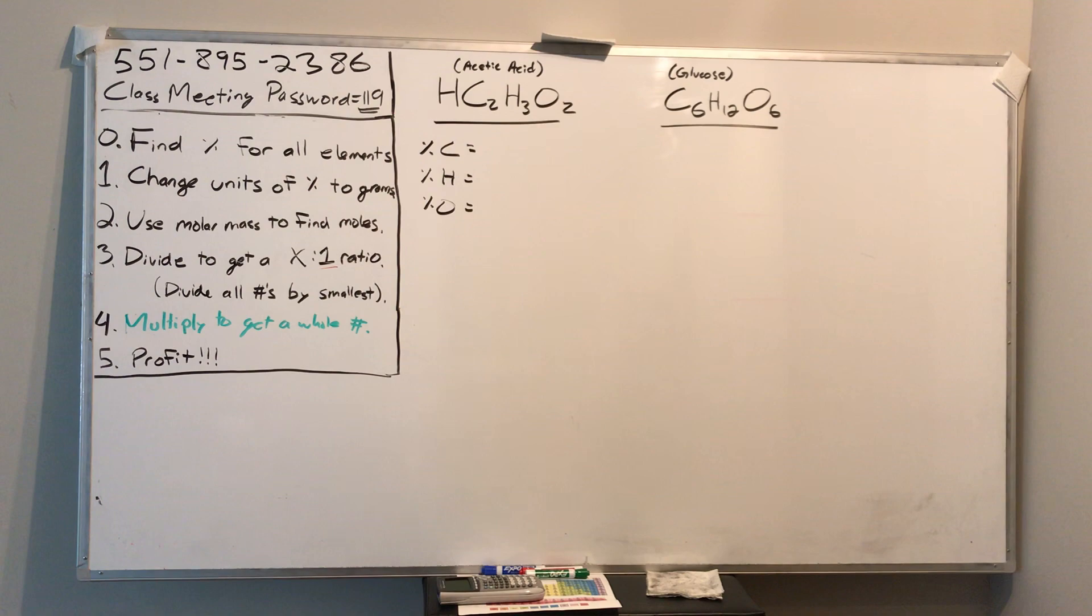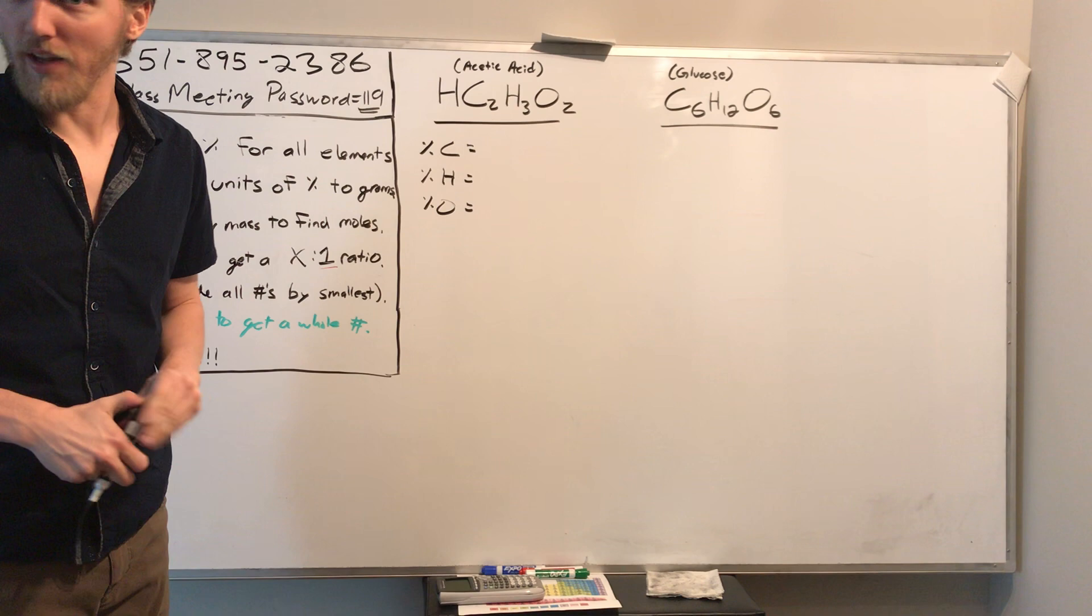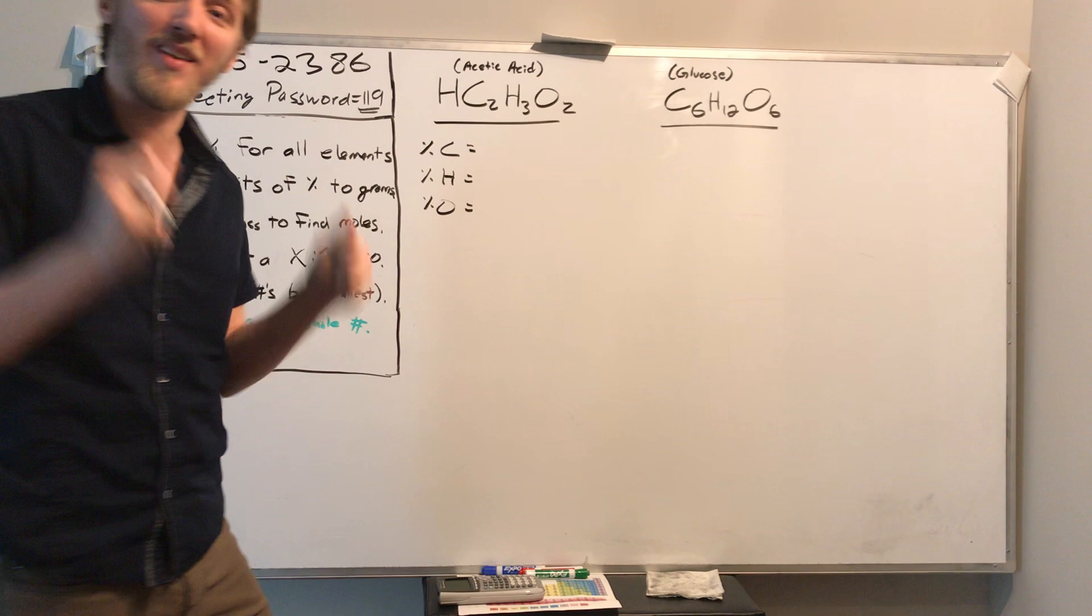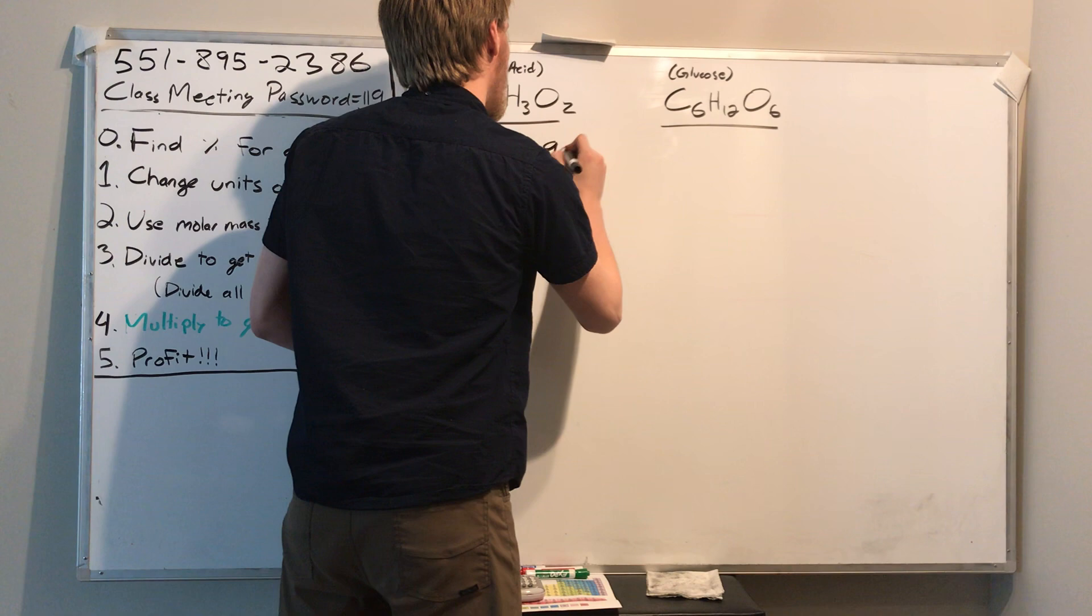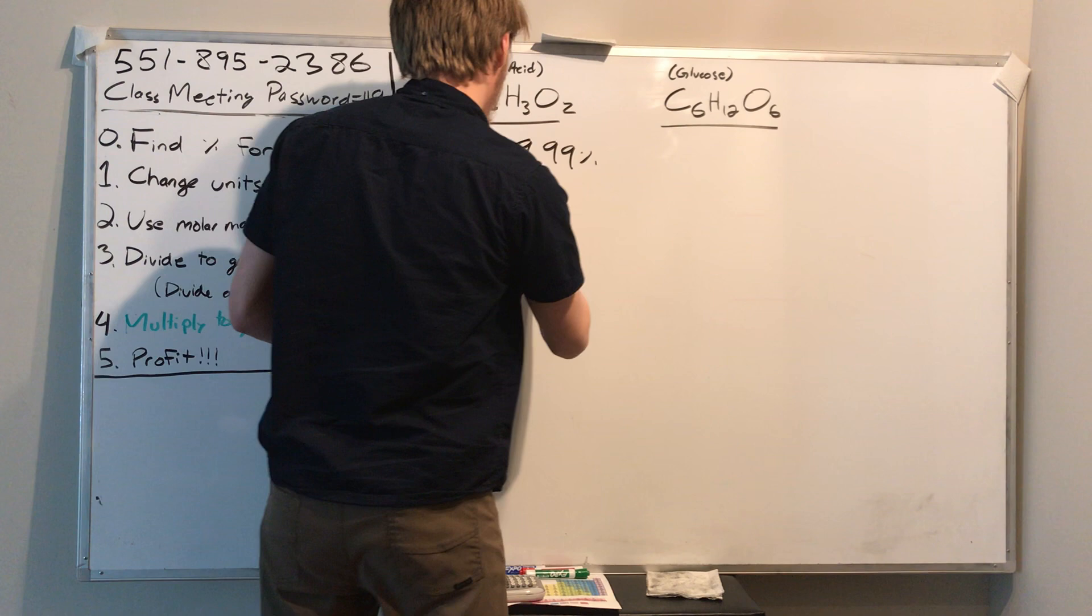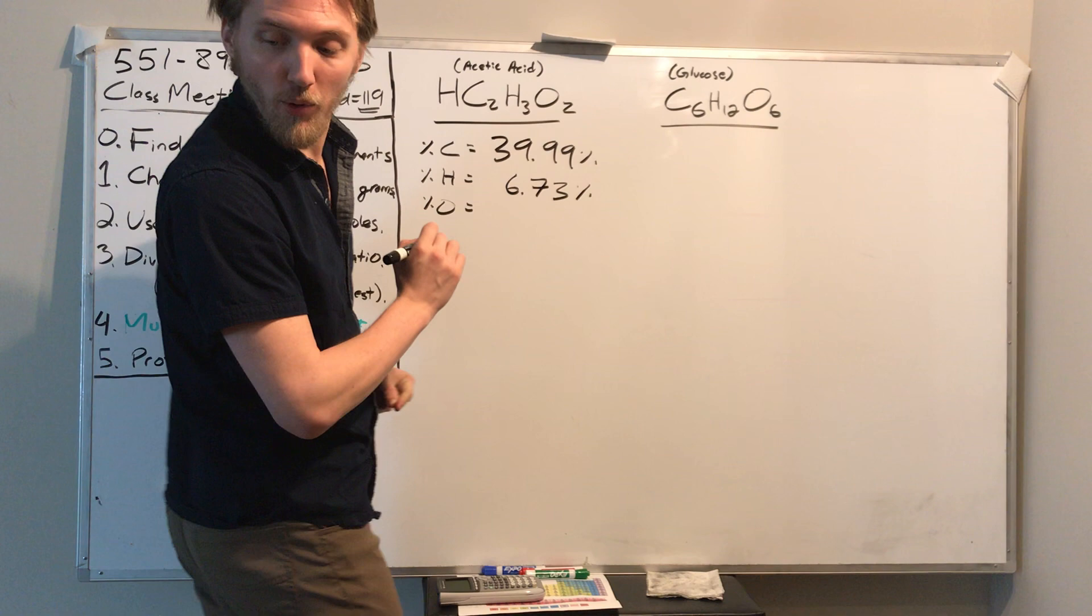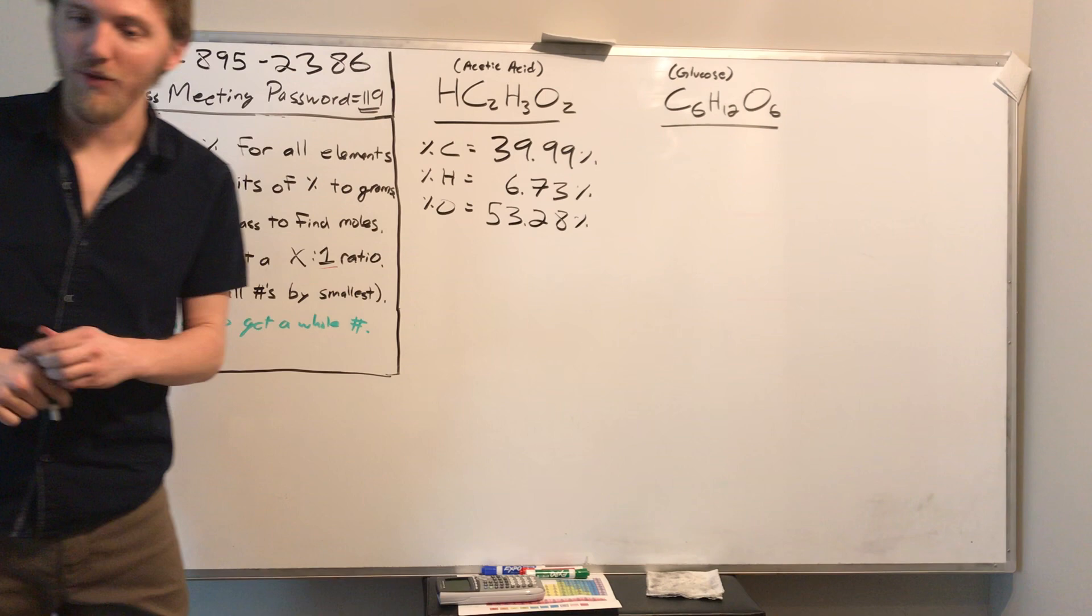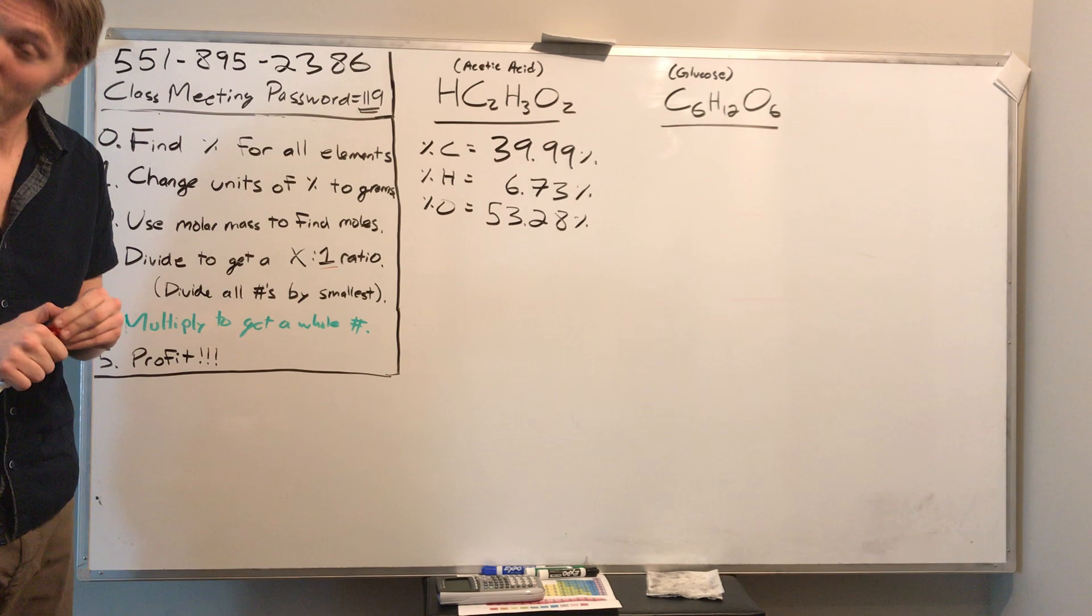Okay. All right. Well, if that didn't work, then I don't know what will. So here's what you should have found. Something very interesting. These two compounds have the same percent composition, even though they're different compounds. They have the exact same composition. You should have gotten 39.99% carbon, 6.73% hydrogen, and 53.28% oxygen. Both of these compounds have the same percent composition. So what is going on here? And now it's time to answer the question.